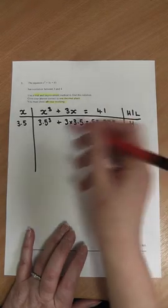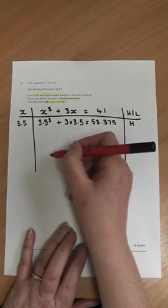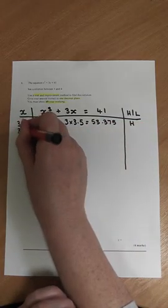Now 53 is obviously much bigger than 41 so that answer is too high. So we know the answer's got to be less than 3.5 because 3.5 is too high, it's got to have a solution that's less than 3.5. So we're now going to try 3.4.